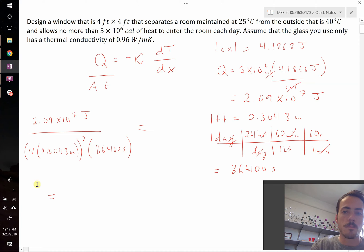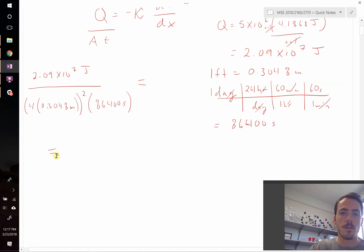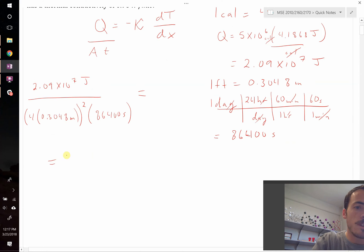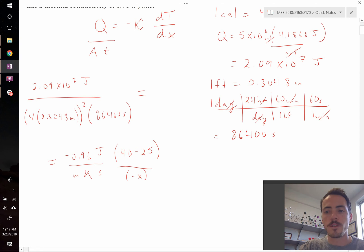What will the right hand side of the equation be equal to? Well it's negative kappa, so that's going to be negative 0.96 watts per meter Kelvin. We know that a watt is just a joule per second, so let's rewrite it as joules per second. We need to multiply this by the difference in temperature. We know that the outside is 40 degrees, that's going to be minus 25 degrees on the inside, and this is going to be over some distance, negative x. That's the way that we read this equation.